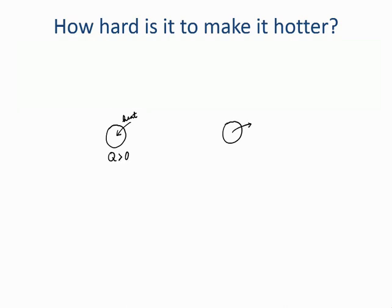Alternatively, the object could lose heat to the surroundings, meaning the heat would be a negative quantity. In the first case, the object would reach a higher temperature than it originally had. In the second case, it would reach a lower temperature.